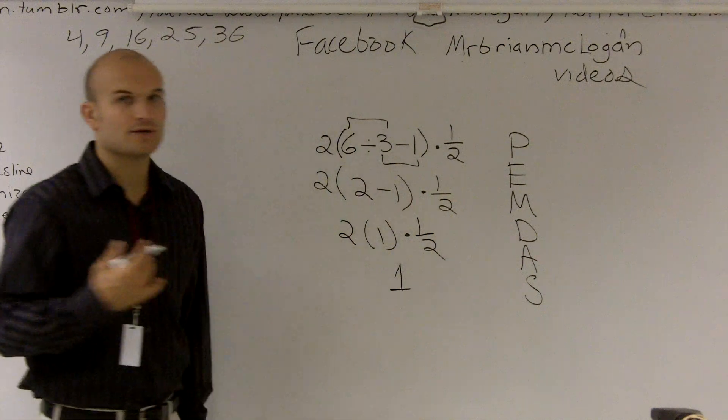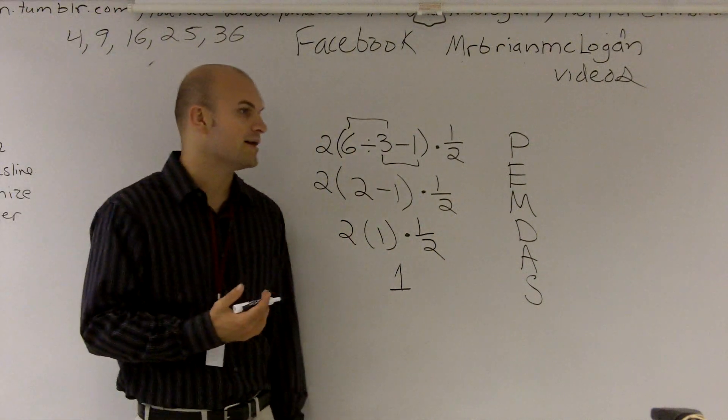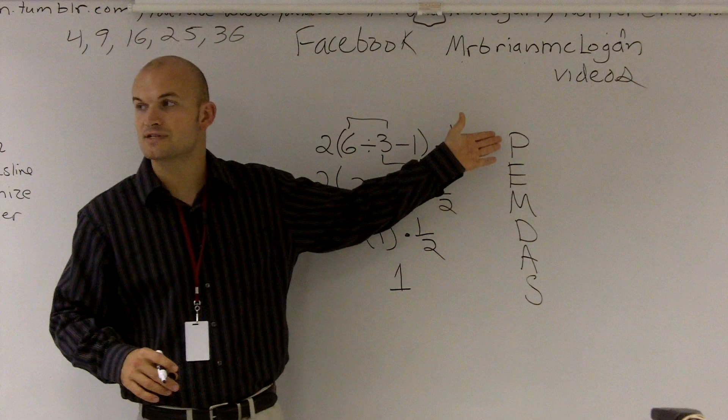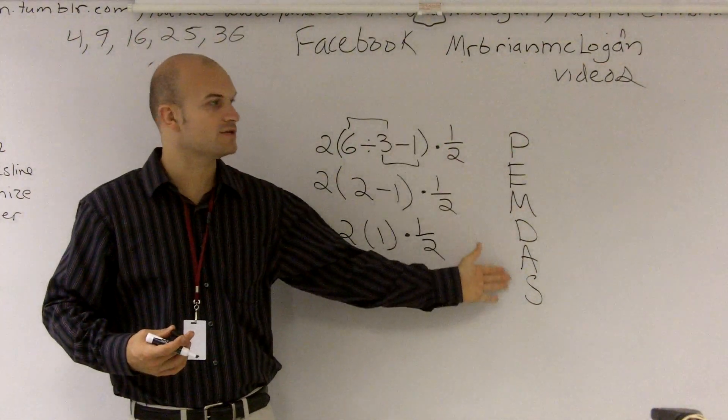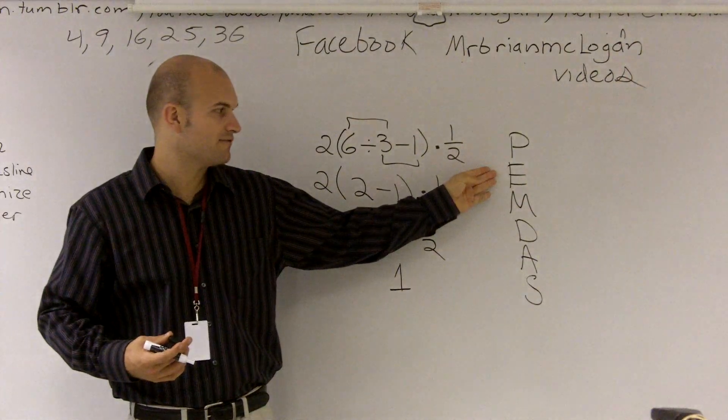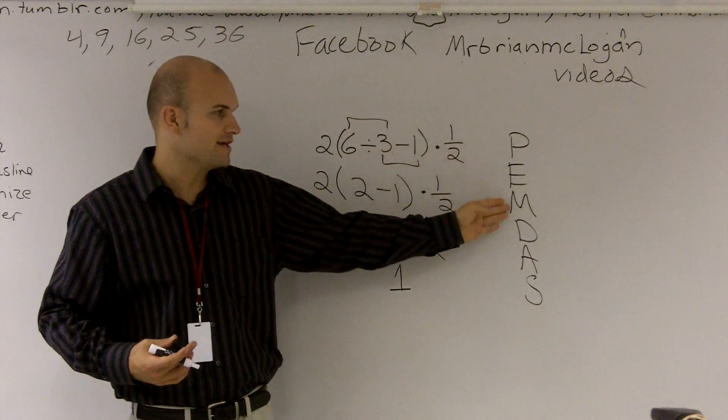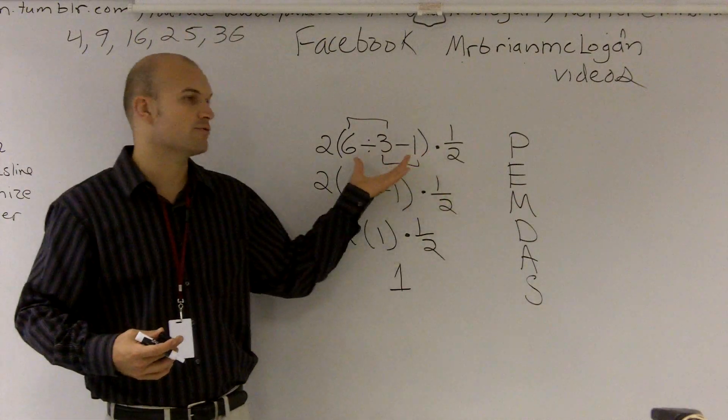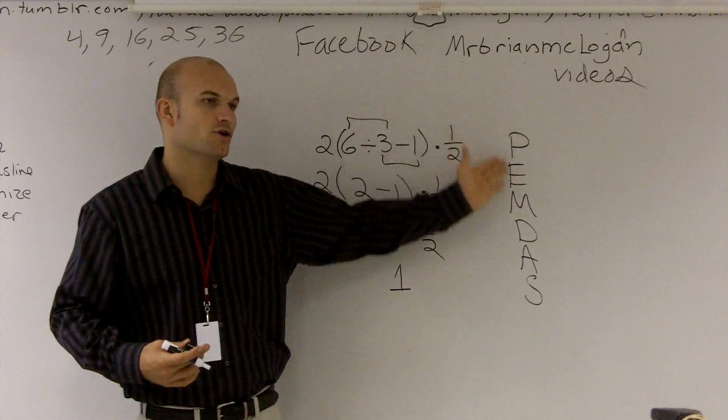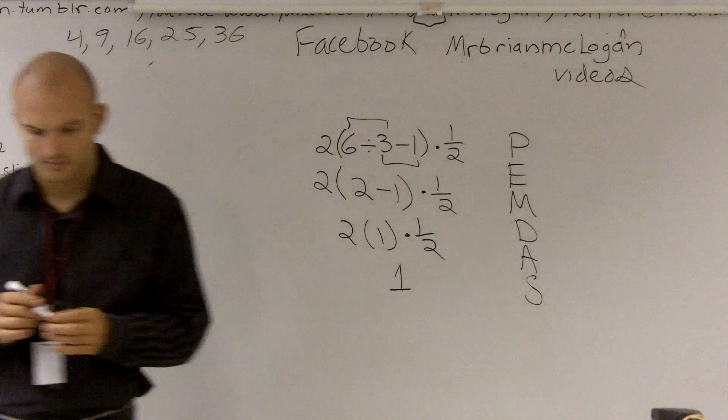So just make sure when you're doing PEMDAS, you always look what's inside the parentheses first. Once you find what's inside the parentheses, make sure you still follow the rules of doing the exponent first. Here we have no exponents. Then just do multiplication and division first, then addition and subtraction. Once you're out of your parentheses, you just go back and apply the same rules again.